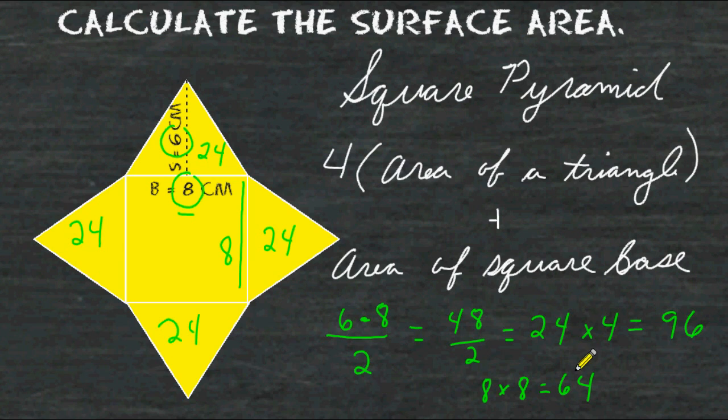So we may add the area of the base which is 64 to the area of the 4 triangles of 96 and we would come up with a sum of 160 square centimeters.